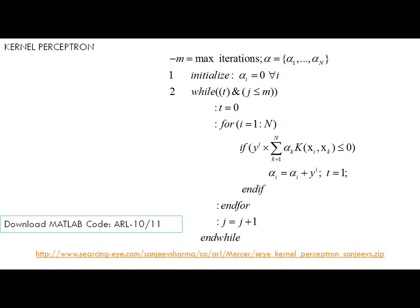Here is the kernel perceptron learning algorithm. The core learning part is: if y_i times the sum over all k from 1 to N of alpha_k times K(xi, xk) is less than or equal to zero — that is, if an error is made on training instance (xi, yi) — then alpha_i is updated to alpha_i plus y_i. You can download the MATLAB code of this algorithm from the link provided.